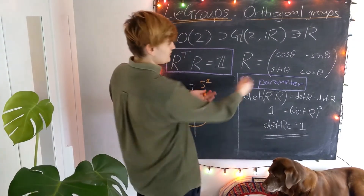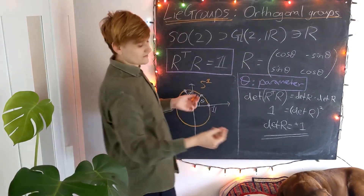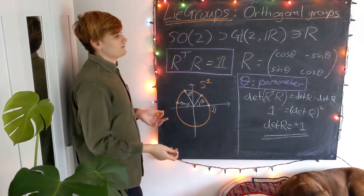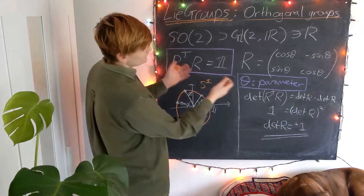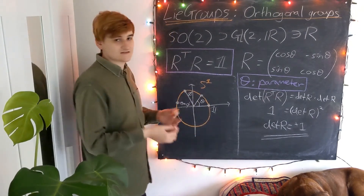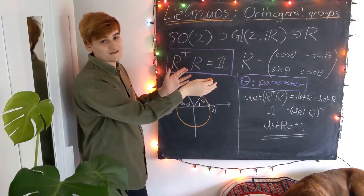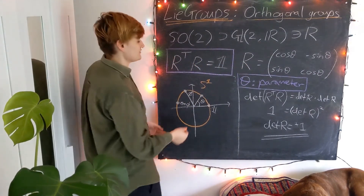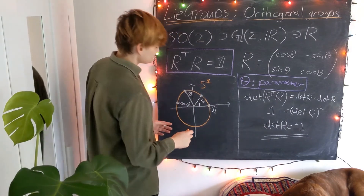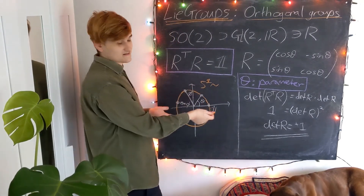You could have realized this by just playing with the values: if you put in theta equals zero you get the same matrix as theta equals two pi, which already tells you there's going to be some kind of cyclic structure. Because we're in one dimension, it's easy to realize that theta is a circular parameter. This is a topological argument: the set of matrices representing this group is topologically equivalent — homeomorphic — to the circle. Homeomorphic essentially just means they're equivalent as topological spaces.